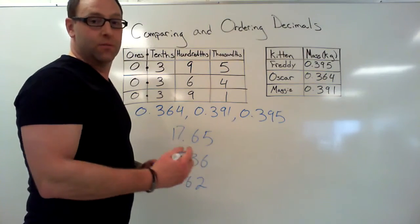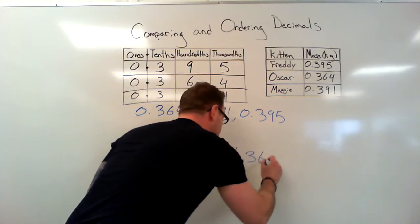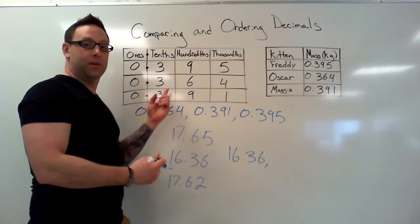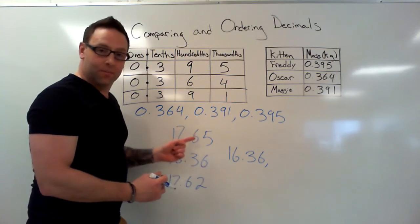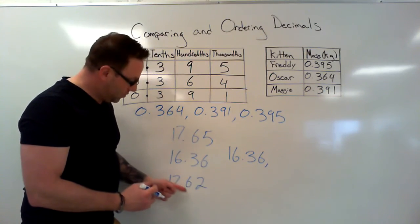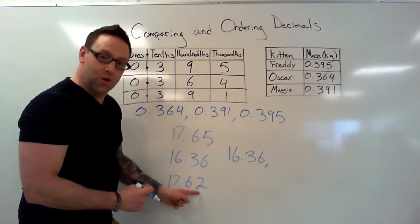Now let's do the same thing that we did up here. In this one we've got 17, we go to the next number, we've got a six, we've also got a six here. Next number, we've got a five in the hundredths place and a two in the hundredths place. So which one's smaller? The two is smaller, so that's going to be our next number ordered from least to greatest.